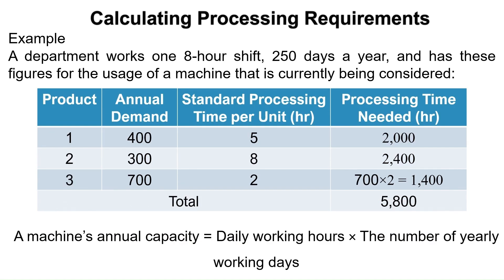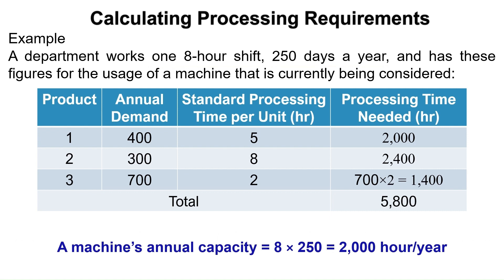Now calculate the annual capacity for one machine by multiplying the daily working hours by the number of yearly working days. It is given that the department works one 8-hour shift daily for 250 days per year. So, a machine's annual capacity equals 8 times 250, equal to 2,000 hours per year.